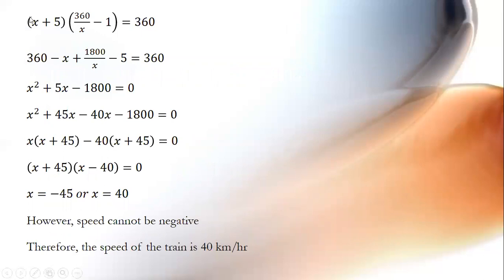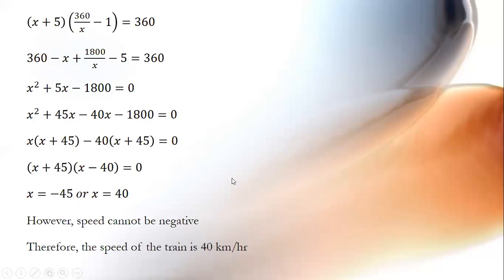We form the equation: (x plus 5) multiplied by (360 by x minus 1) equals 360. Solving term-wise and taking LCM, we get 360x minus x squared plus 1800 minus 5x equals 360x. Simplifying, we get x squared plus 5x minus 1800 equals 0. Splitting the middle term as 45x minus 40x and solving, we get x equals minus 45 or x equals 40. Speed cannot be negative, so the speed of the train is 40 kilometres per hour.